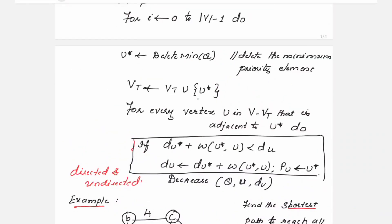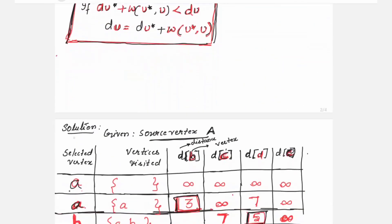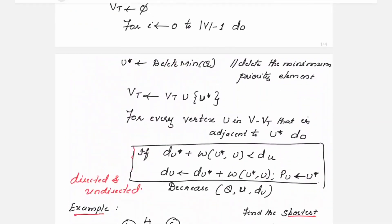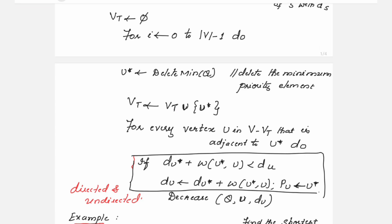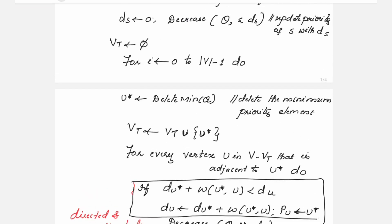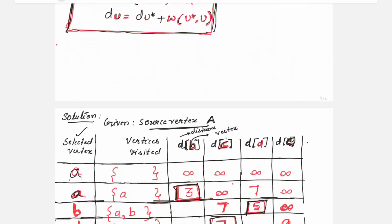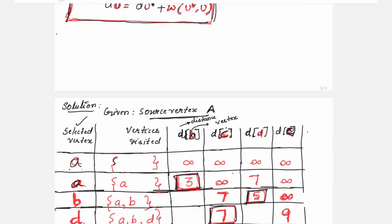In the pseudocode, u* is the vertex we finalize, appearing in the selected vertex column of the table. u* undergoes a union operation with VT — the set of visited vertices, initially null. You keep finalizing vertices and adding them to VT.